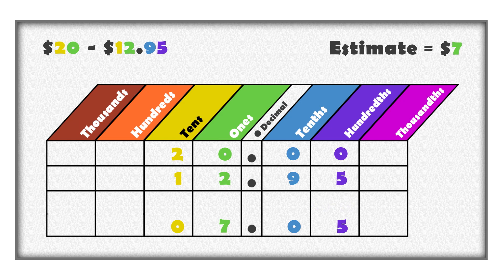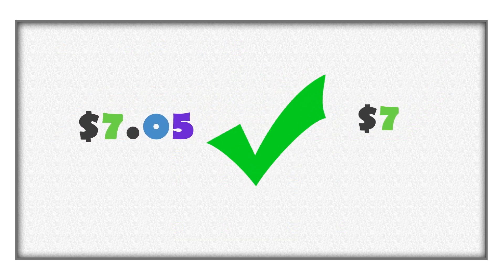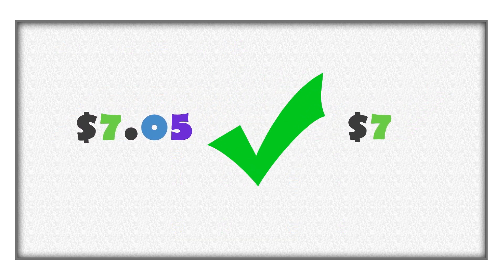There are 0 tens, 7 ones, 0 tenths, and 5 hundredths remaining. In other words, 20 dollars subtract 12 dollars and 95 cents is 7 dollars and 5 cents. We get the same difference using each method. The estimate is still close to the difference, so we can be confident about the answer.